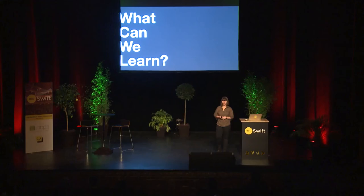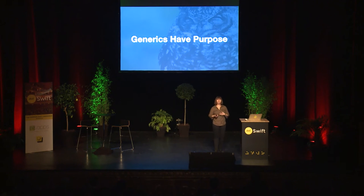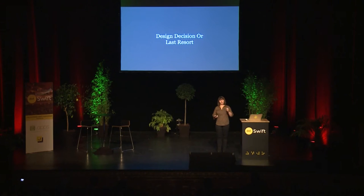So what can we learn from what the standard library does and doesn't do? First of all, generics always have a purpose. They're either a design decision — because something like a collection can hold any kind of object and they're specifically saying we can hold any type — or there's a last resort when they've designed themselves into a corner and the language doesn't support what they need to do, so they use generic type constraints to preserve type safety. So when you're thinking about adding a new generic type, generic protocol, or even a generic function, you really want to think about what problem you're solving. Do you really want to make this generic, or are you working around a language limitation?